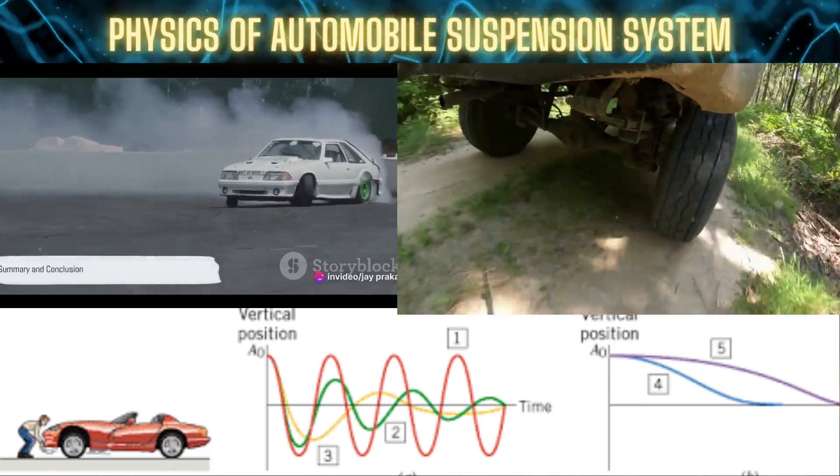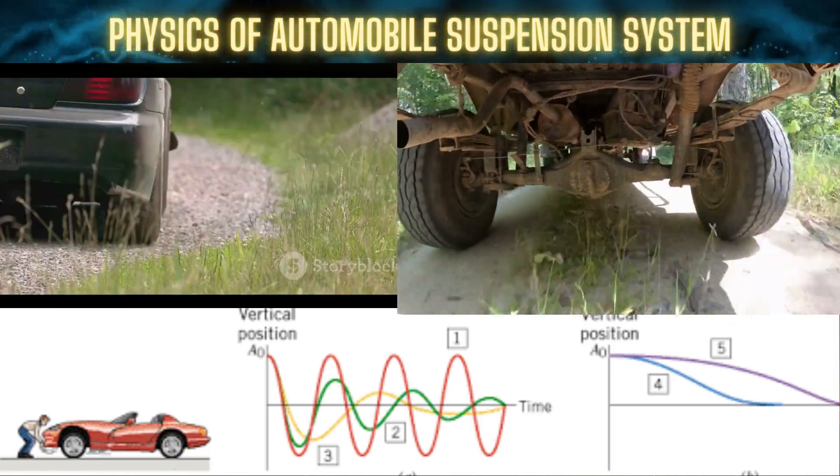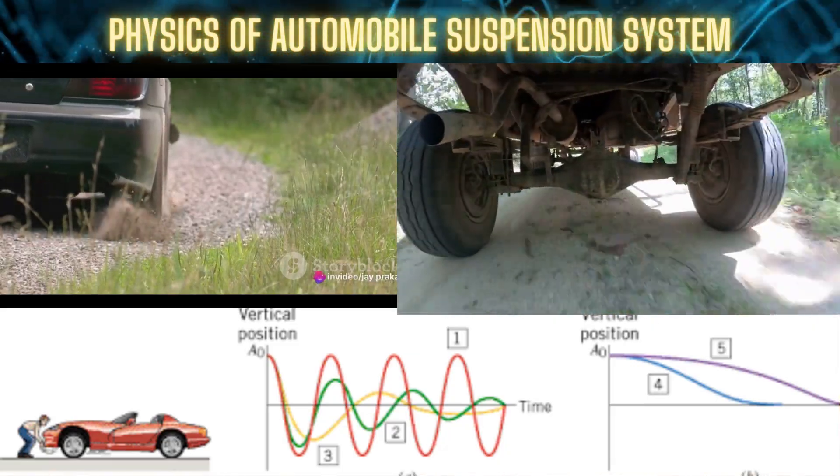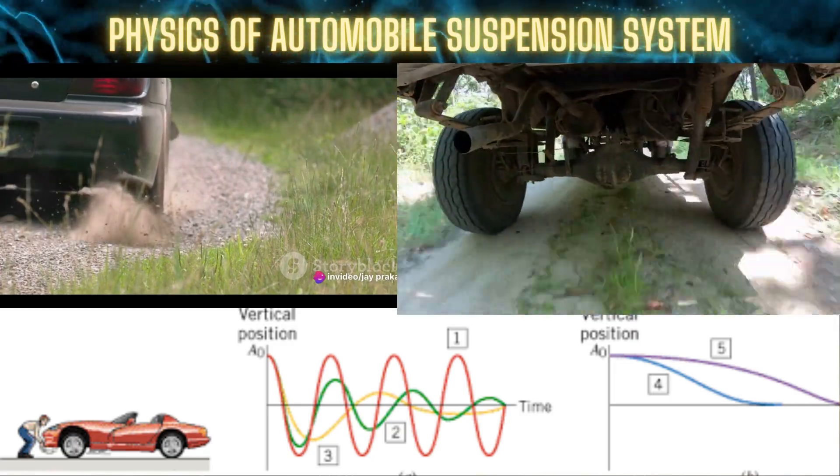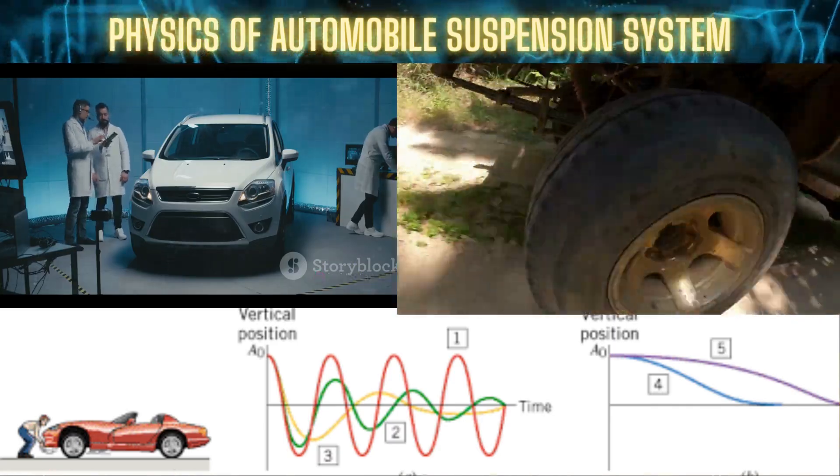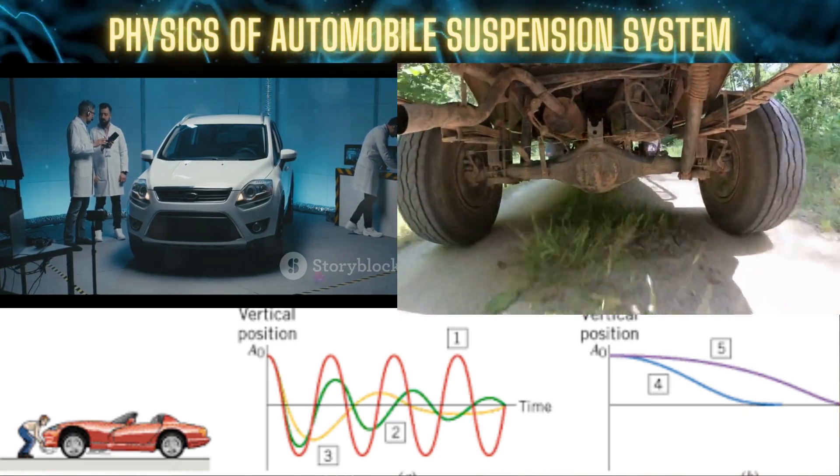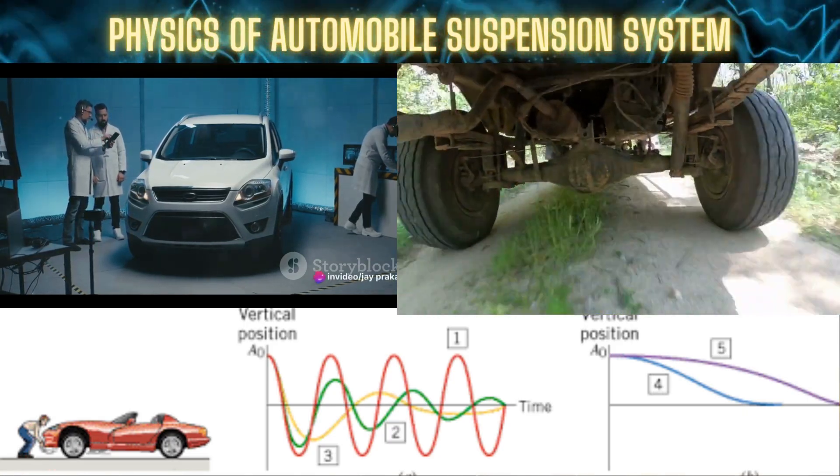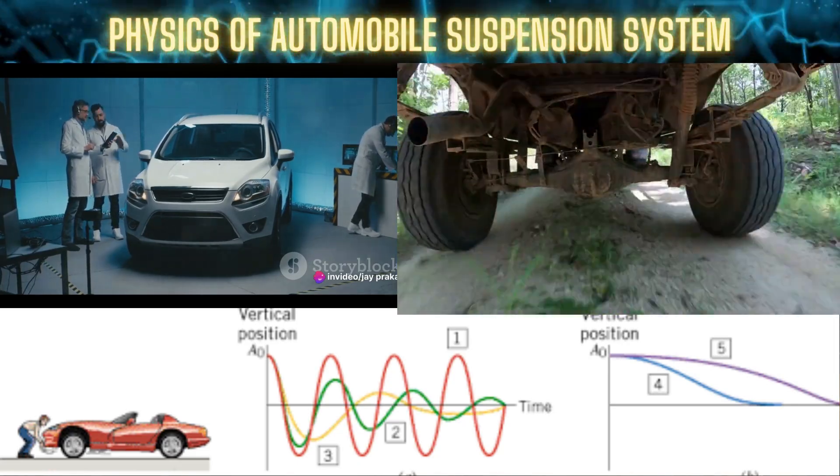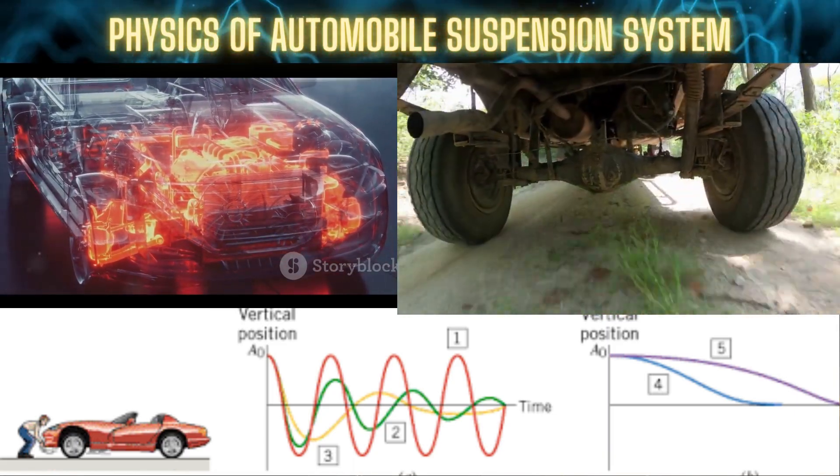So, let's wrap up what we've learned about the physics of car suspension systems. The suspension system is a vital component of any vehicle, designed to maximize the friction between the tires and the road surface, providing steering stability and ensuring passenger comfort. It's the principles of physics that make it all possible. The balance between potential and kinetic energy as the springs compress and expand, the damping force resisting this motion, and the oscillation of the car body all come together in a symphony of physics.